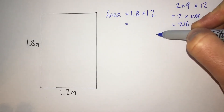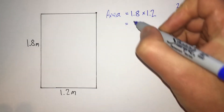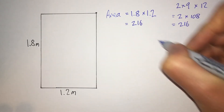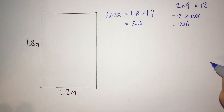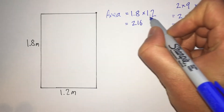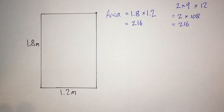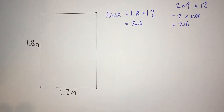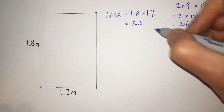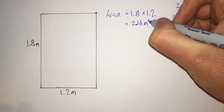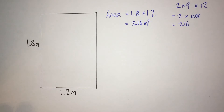If I continue this calculation, I'll write 216 as the correct digits. But there are two decimal places in the question, so there are two decimal places in my answer. And that's going to be 2.16 meters squared.